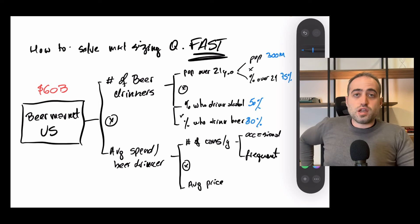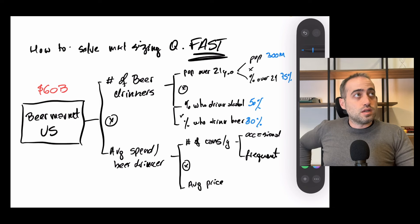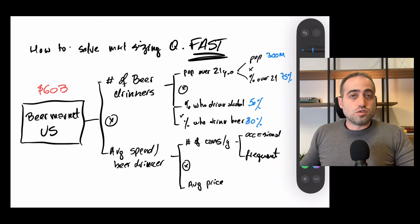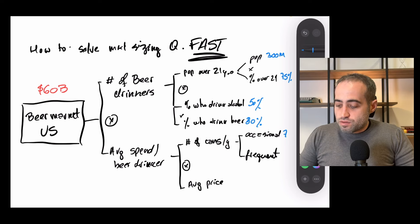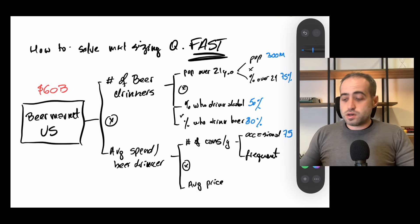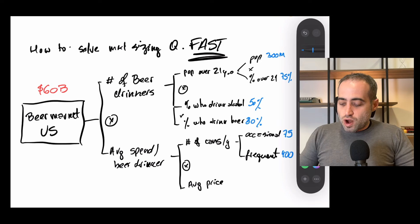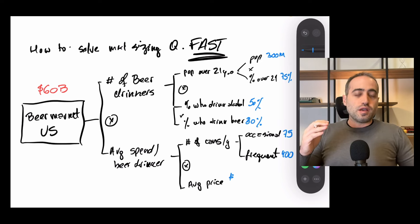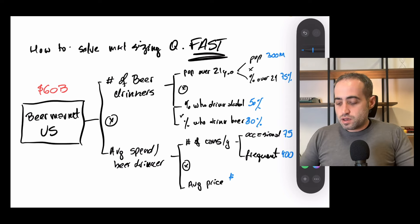So let's say that 50% of adults drink alcohol and then 80% of those drink beer. And then cans per year, let's say for the occasional drinker, that is, I don't know, like one or two cans per week. So that would be, let's say 1.5, about 75 cans per year. And then for frequent drinkers, let's say they drink one per day, let's say 400 per year. And then the average price, it depends if it's a bar, if it's a grocery store. Let's say $1.5.